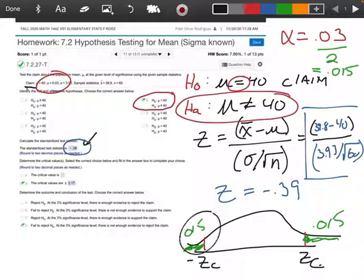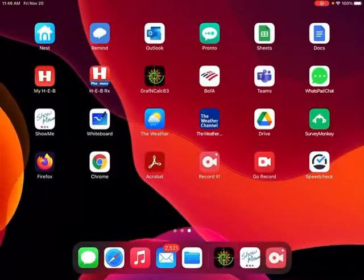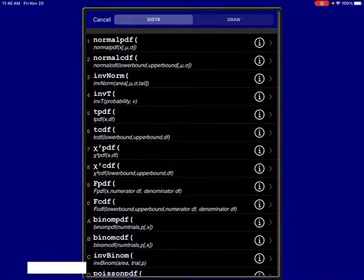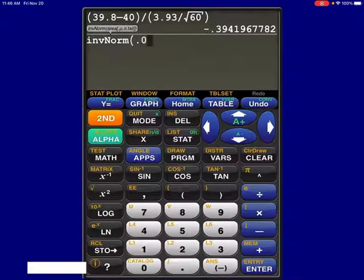So the way we're going to find this is we're going to use our calculator. We're going to go to our inverse norm, and we're going to enter in the number 0.015. So let me get my calculator again. Here we go.